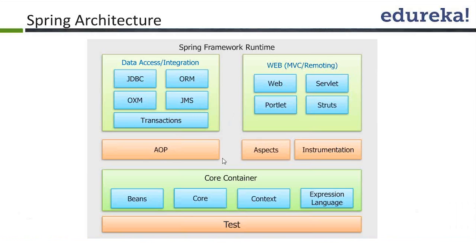AOP stands for Aspect Oriented Programming. The key thing to understand about this layer is that it deals with aspects, cross-cutting concerns, or boilerplate concerns.